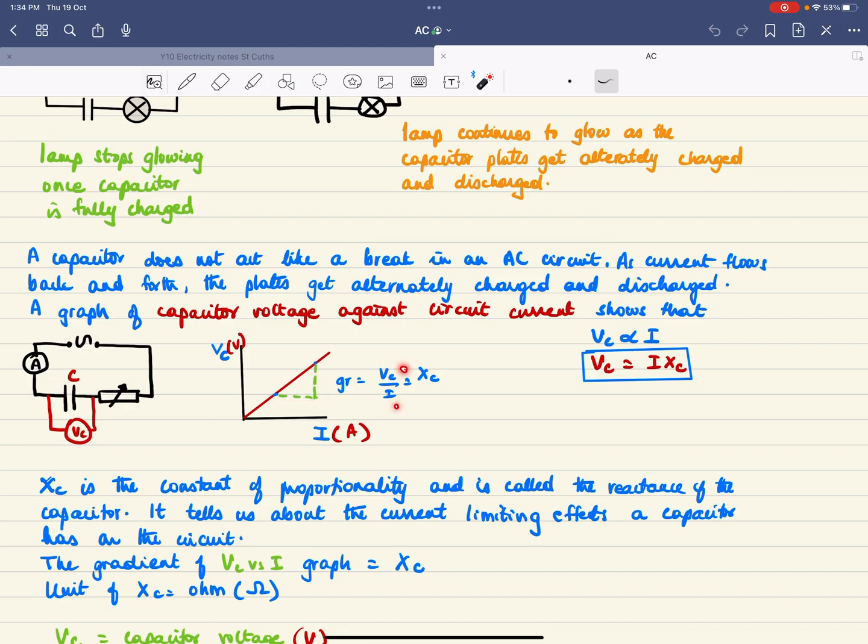The gradient will give you Vc over I, which is actually the reactance of the capacitor, and that's your constant of proportionality.